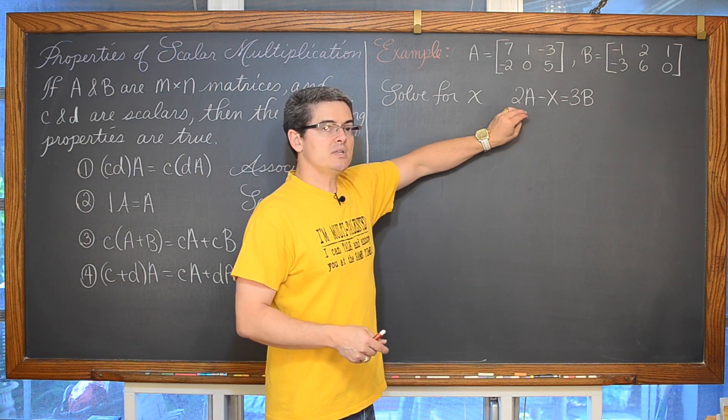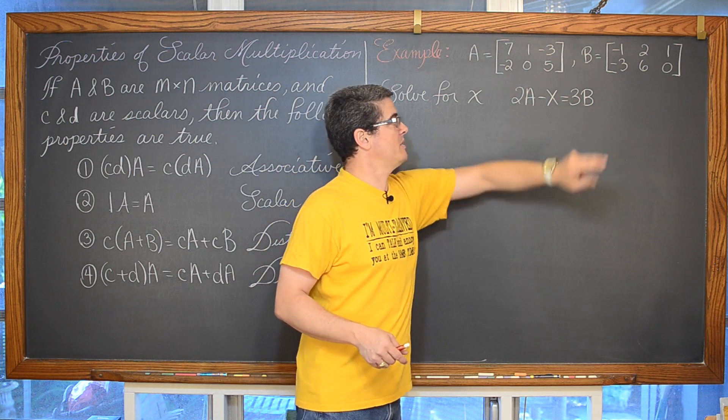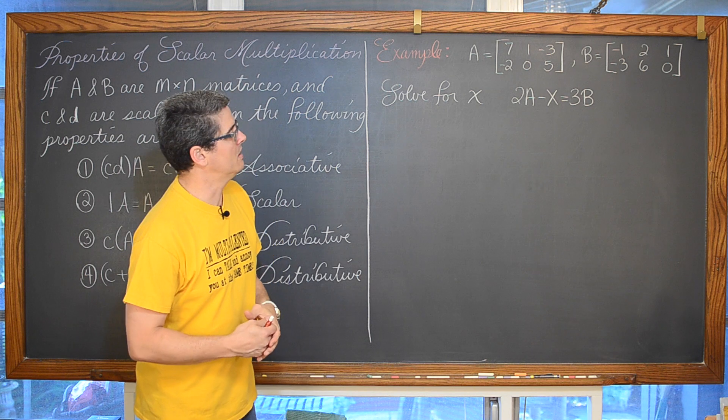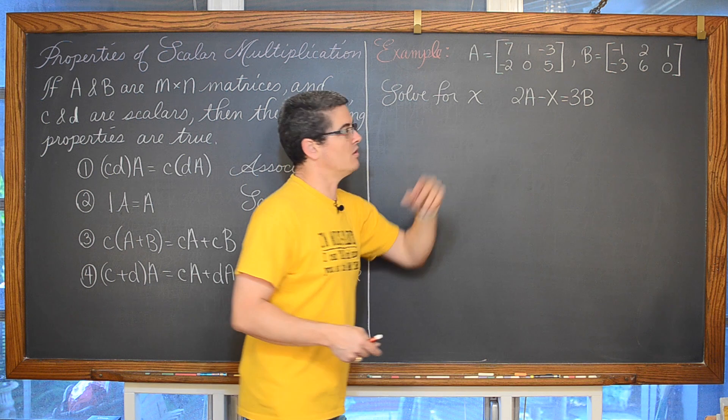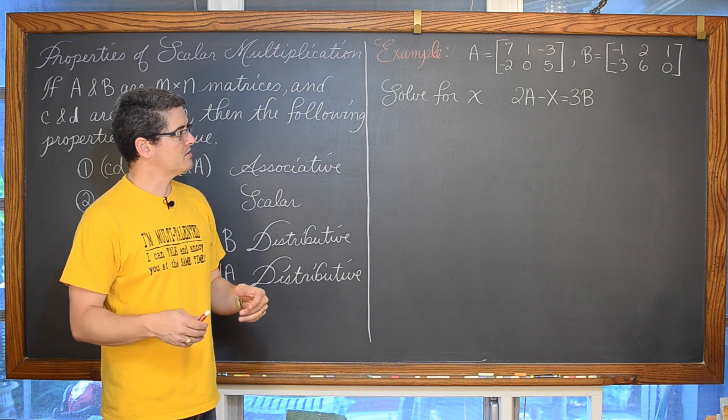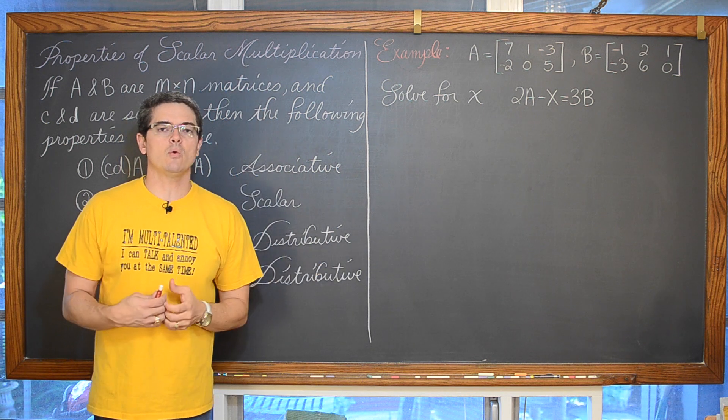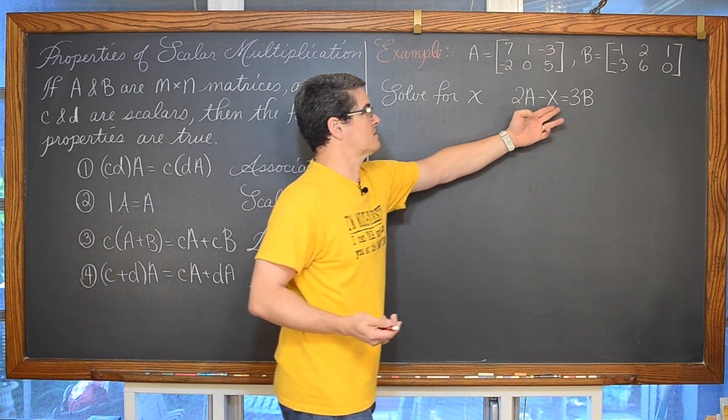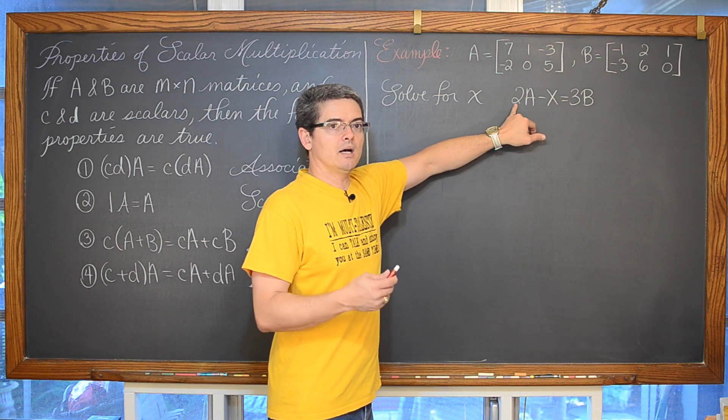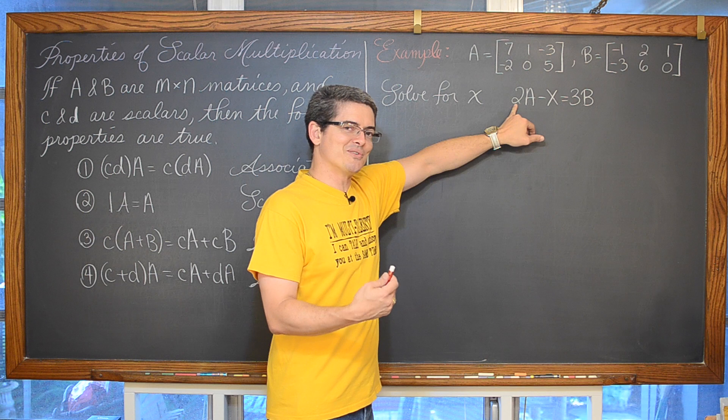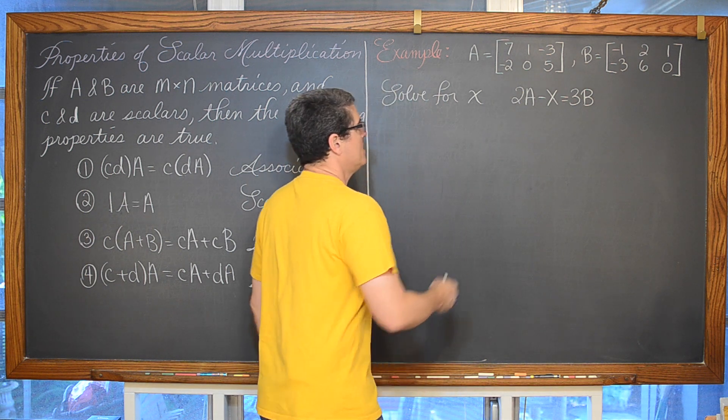The matrix of 2A minus some other matrix, matrix X, is going to be equal to the matrix, what we get when we take the scalar of 3 and apply it to matrix B. We are going to solve for X. And solving this equation is very similar in the beginning to just solving a two step equation you learned in Algebra 1. We are going to isolate the X. So we are going to move this term of 2A, or scalar multiple of 2 applied to matrix A, but just think of it as 2A. We are going to subtract that from both sides of the equation.